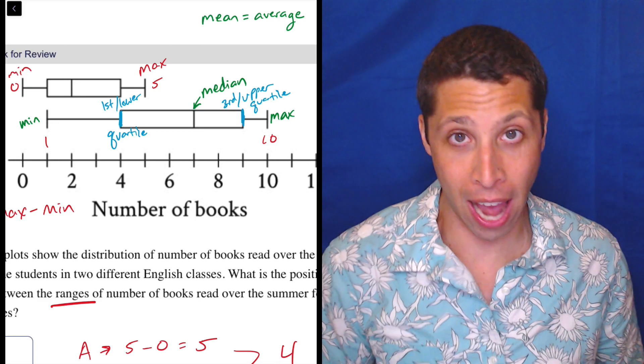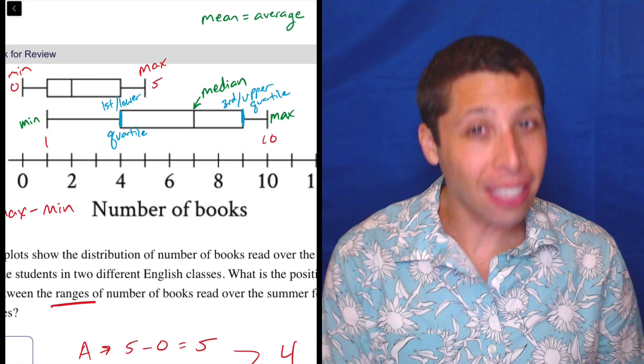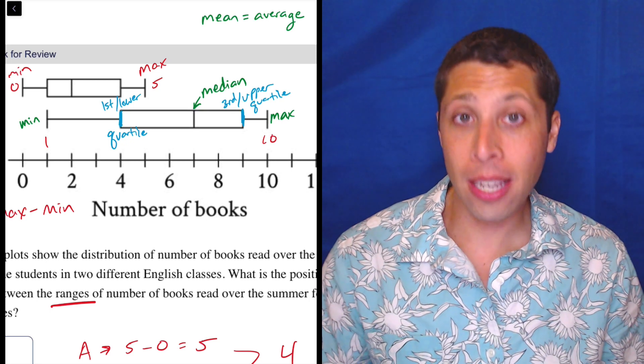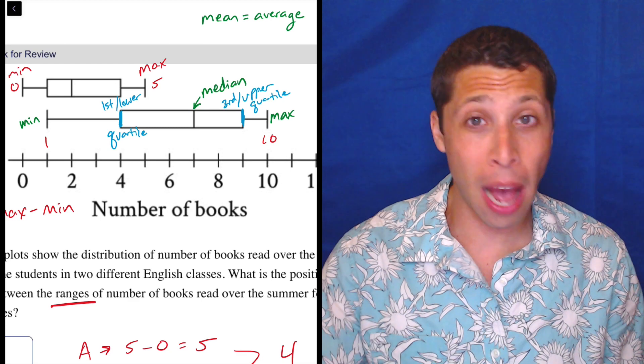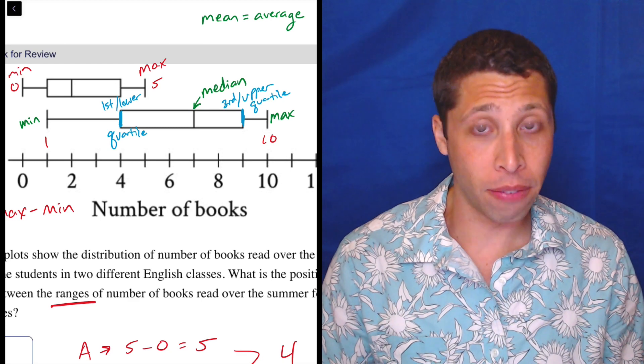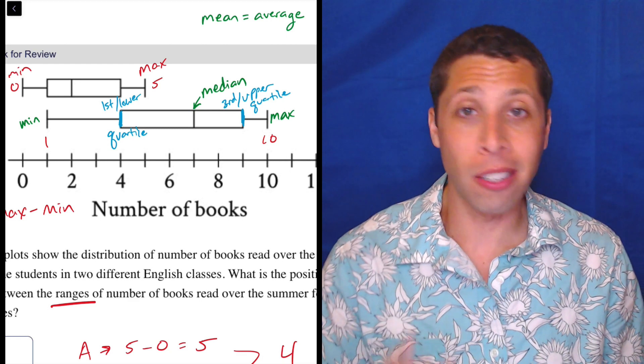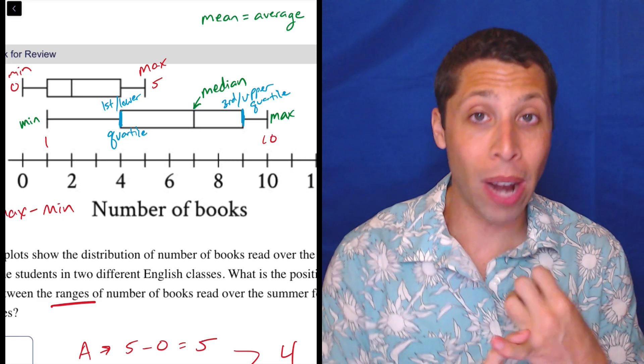It's very unlikely that you would need to do that for an SAT, because box plots as it is are kind of like a very rare topic. They come up, but not very often. So mostly what you're going to need to know is what I've shown you so far: the range, the maximum, the minimum, the median.